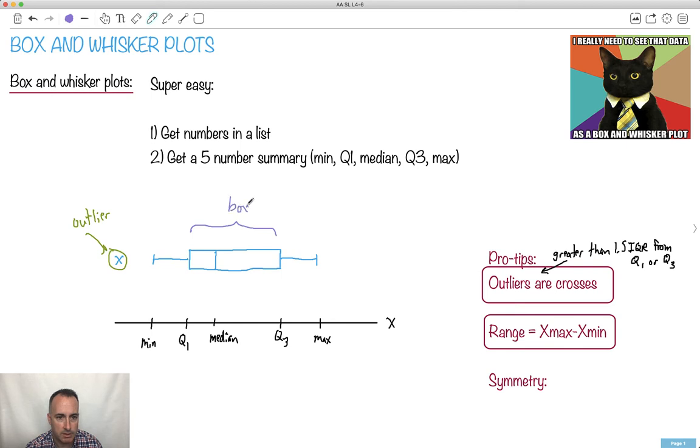By the way, you can see that this right here is the box. And here's the whiskers. Here's a whisker here, and also here's a whisker there. So those are the whiskers. That's why it's a box and whisker plot.